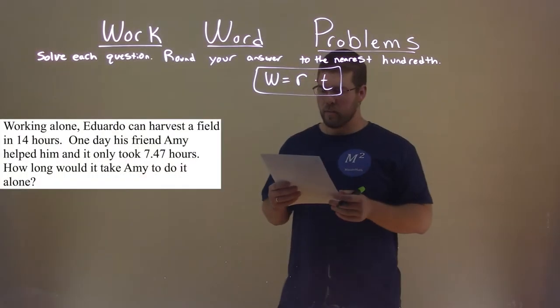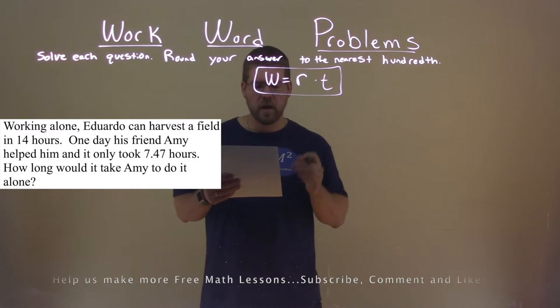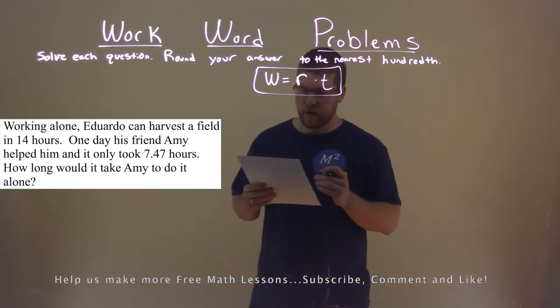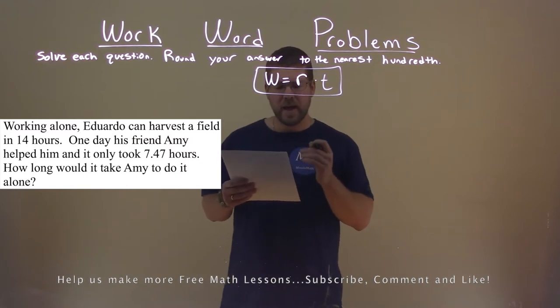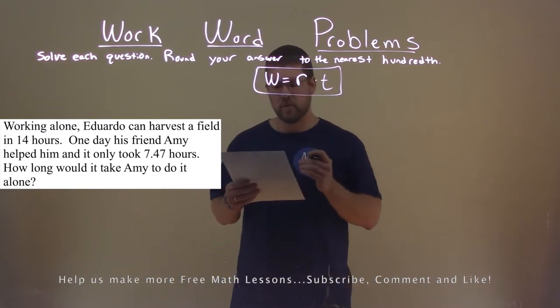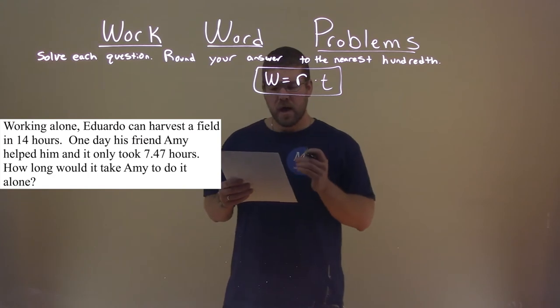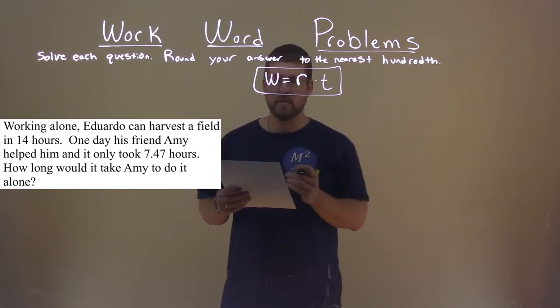We're given this problem right here. Working alone, Eduardo can harvest a field in 14 hours. One day, his friend Amy helped him, and it only took 7.47 hours. How long would it take Amy to do it alone?